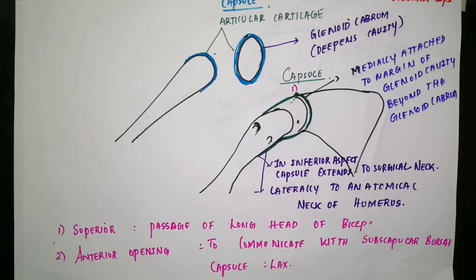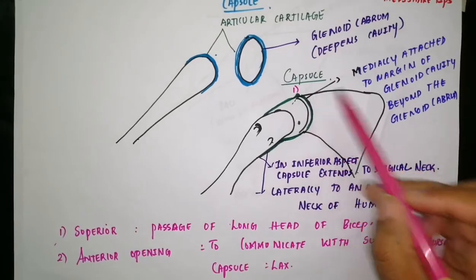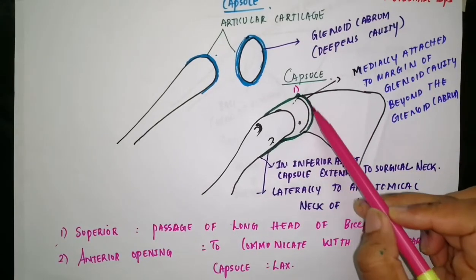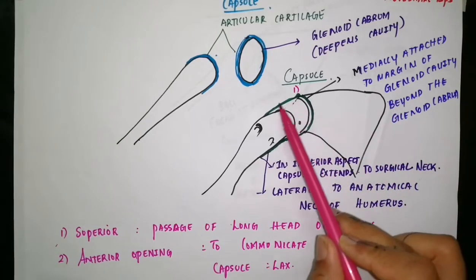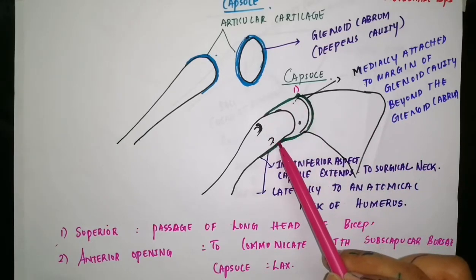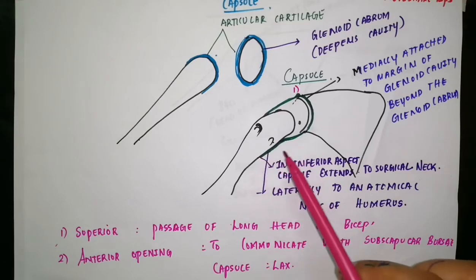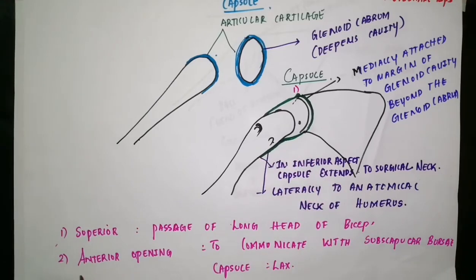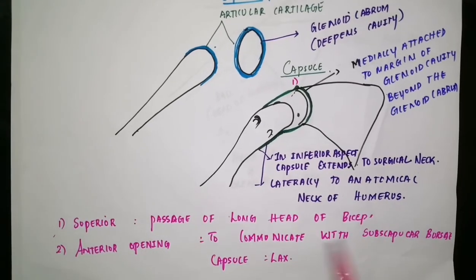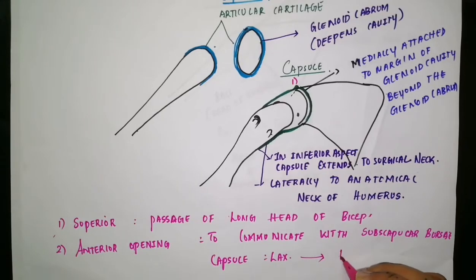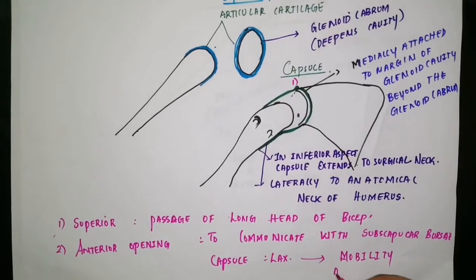The laxity of the capsule permits high mobility to the joint but there is less structural stability because of the laxity of the capsule. The anterior portion of the capsule is reinforced by ligaments. In summary: medially attached to glenoid cavity beyond glenoid labrum and supraglenoid tubercle; laterally to anatomical neck; the capsule is lax, providing mobility at the cost of stability.